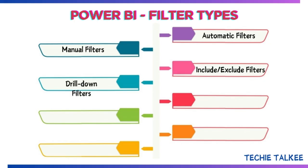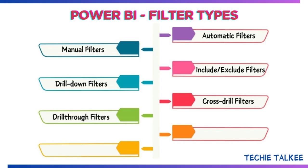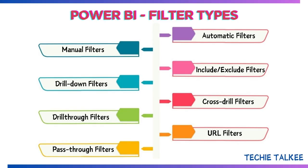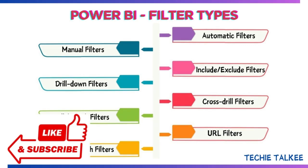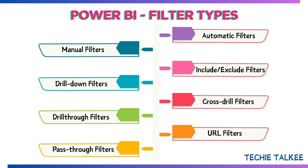These are the different types of filters that we have in Power BI: automatic filters, manual filters, include and exclude filters, drill down, cross drill filters, drill-through filters, URL filters, and pass-through filters. Subscribe to my channel to get alerts on my new videos on technical content. Let's get started with the filters one by one.